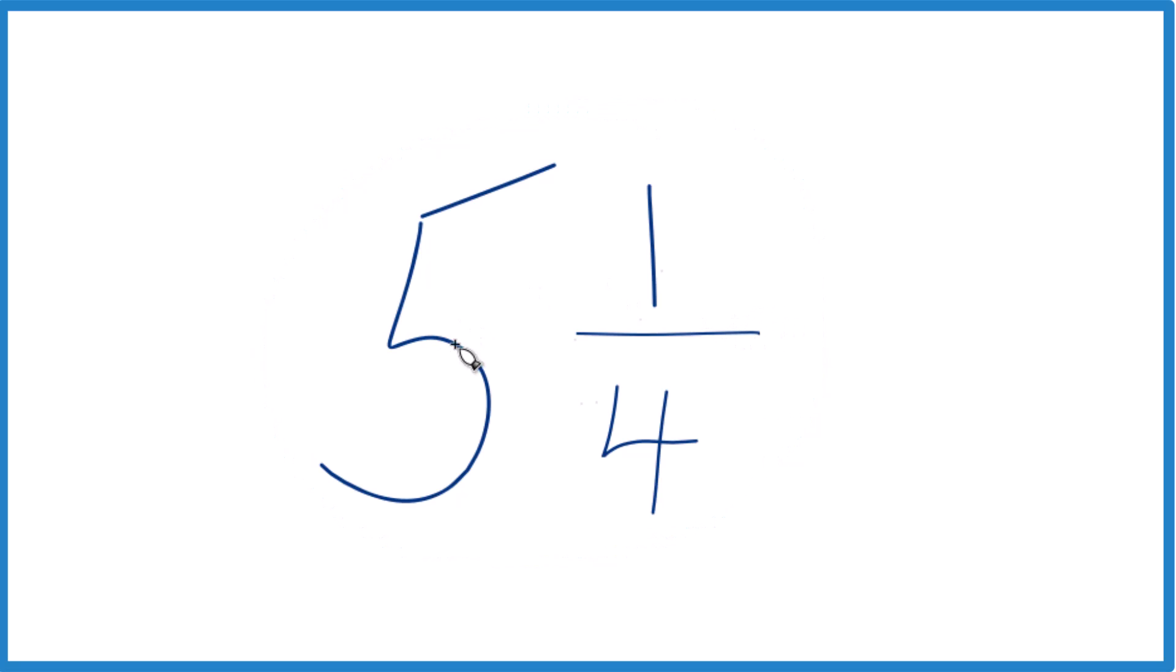And here's how you do it. 5 times 4, that's 20. So 5 times 4 is 20 plus 1, that gives us 21.